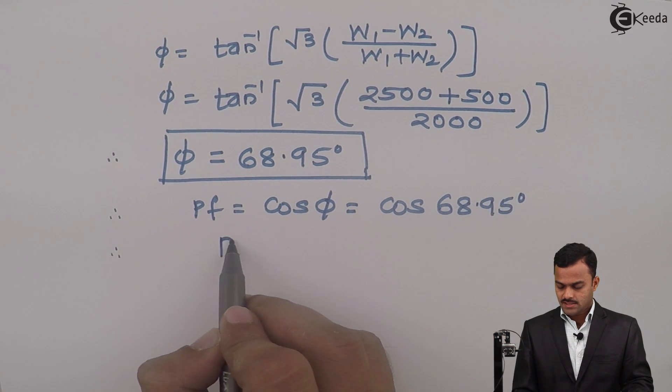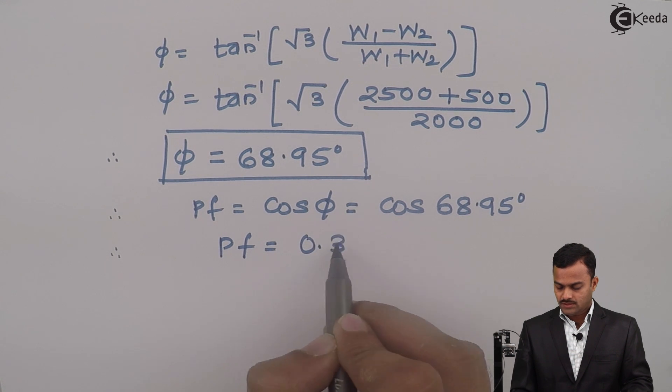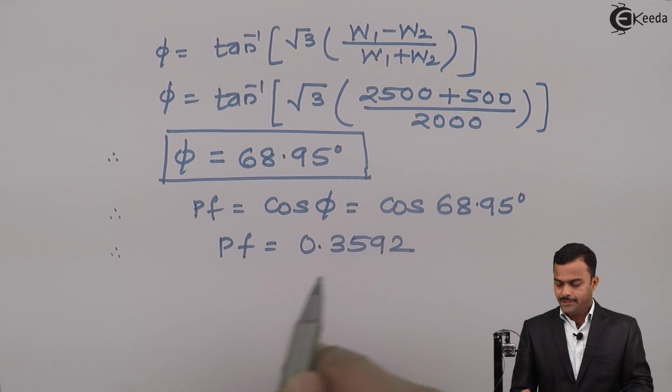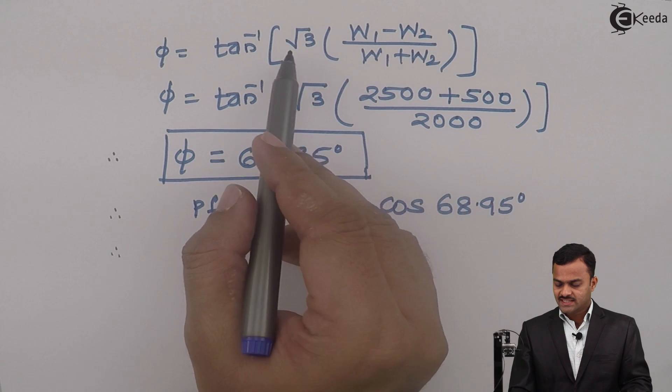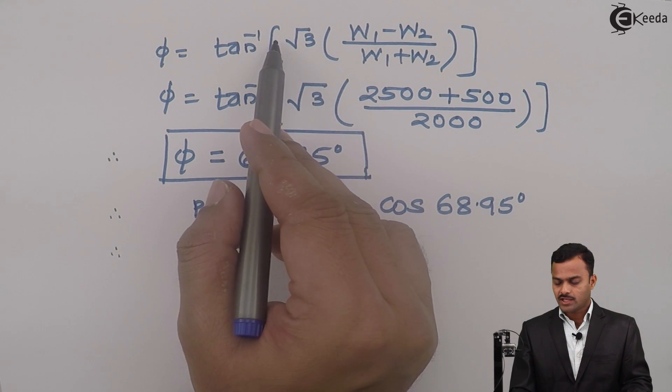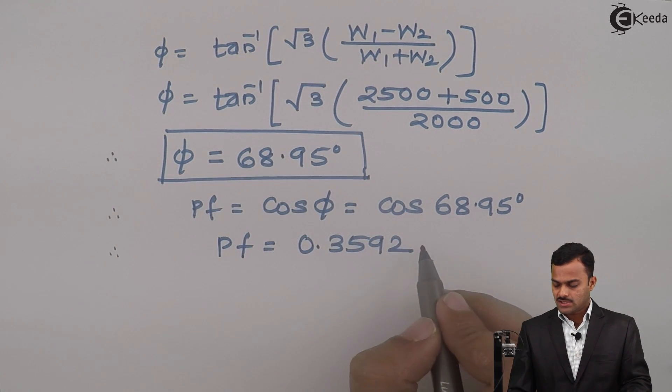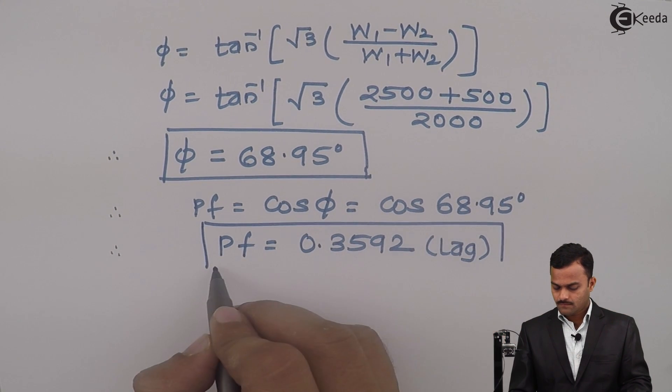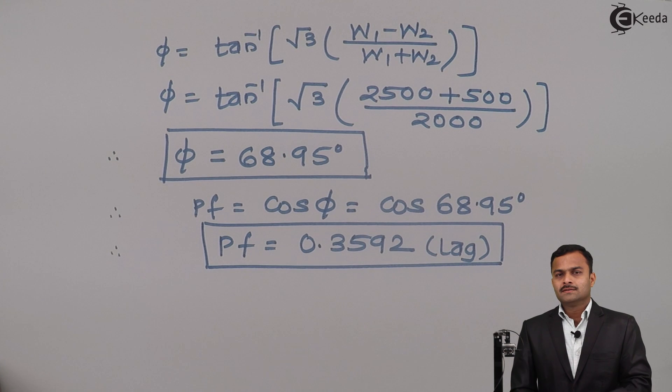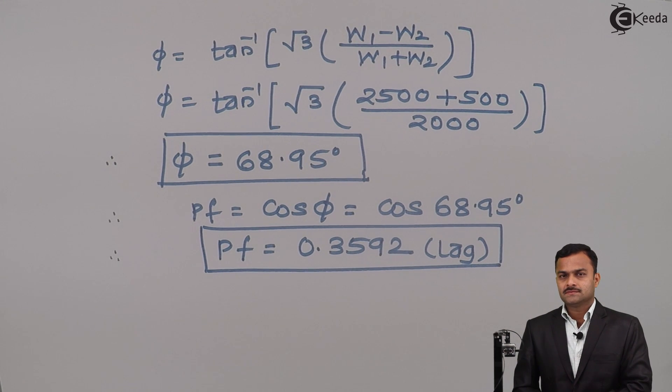The answer: power factor will be 0.3592. Once again, I use this formula without negative sign over here, hence nature of power factor is lagging. This is the required answer. Thank you.